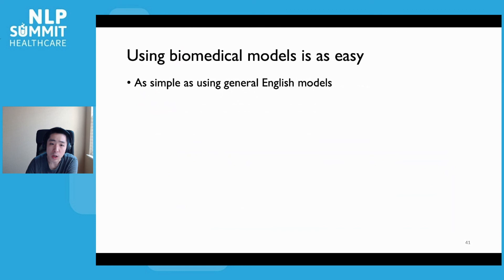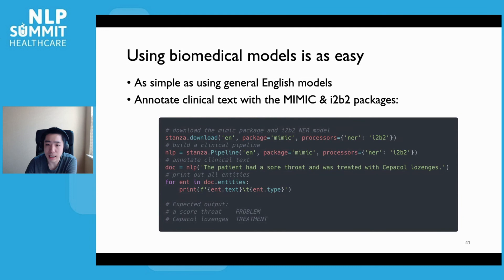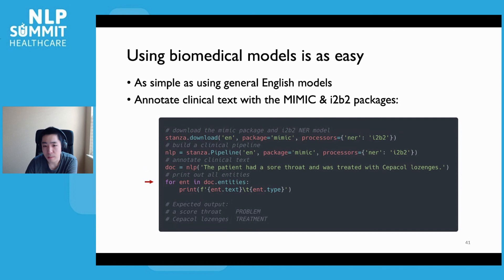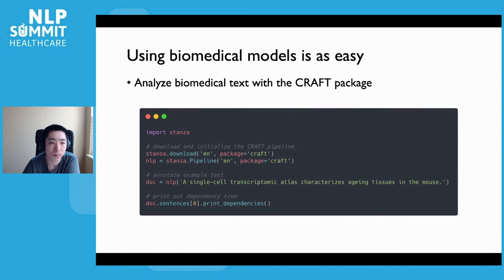Using Stanza's biomedical and clinical pipelines is just as simple and easy as using the general English pipeline. This example shows how to annotate a clinical text with the MIMIC syntax analysis package and the I2B2 NER package in just a few lines of code. You need to download the Stanza biomedical models with a single line of code, instantiate a Stanza biomedical pipeline with the same settings, pass in the text to the pipeline for processing, and access the annotations through Python objects. Using the biomedical models really requires no additional effort.